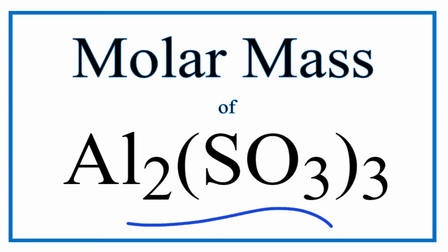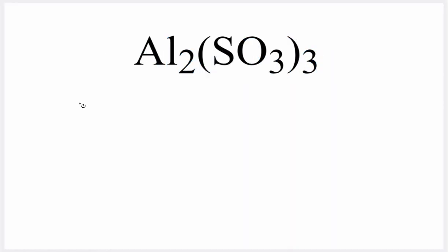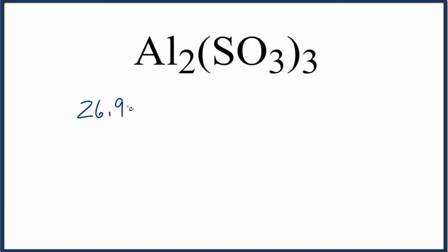To find the molar mass or molecular weight for aluminum sulfite, let's start with aluminum here, which is 26.98 grams per mole, and we have two of them.